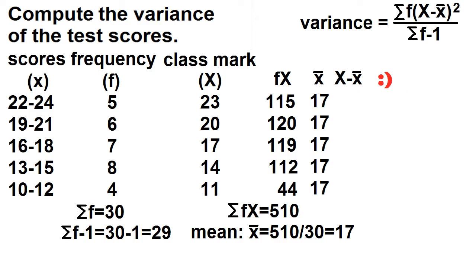23 minus 17 is 6. 20 minus 17 is 3. 17 minus 17 is 0. 14 minus 17 is negative 3. 11 minus 17 is negative 6.